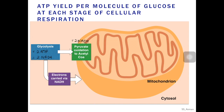After pyruvate oxidation, we have the citric acid cycle. In the citric acid cycle, we have two molecules of ATPs being produced, six NADH and two FADH2 molecules are being produced.